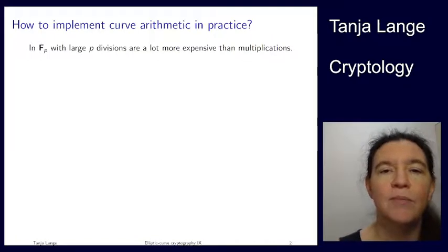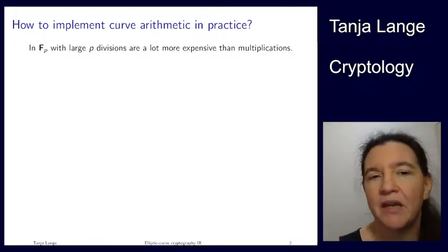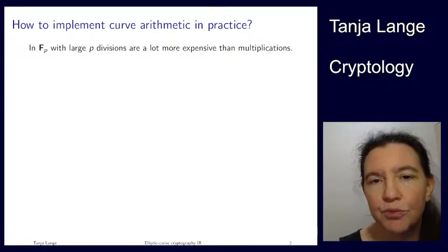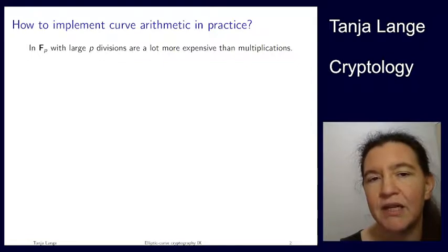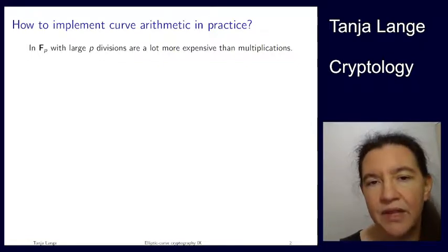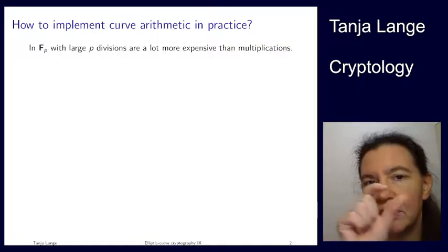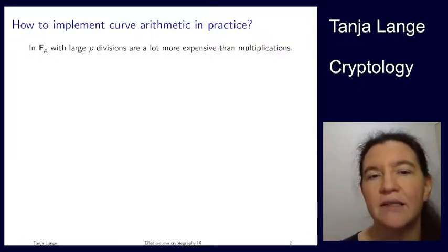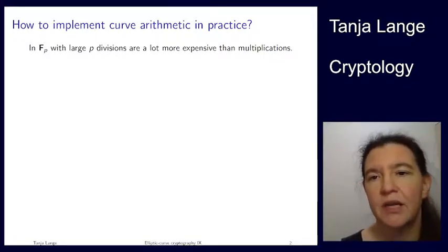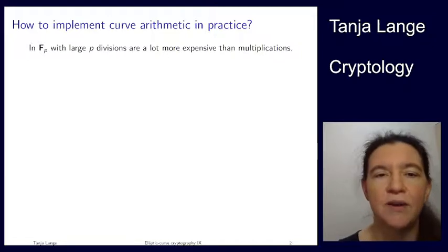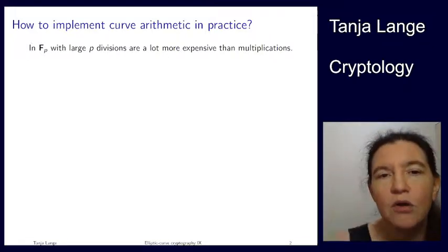But if you actually were to implement those on a computer, you're looking at a large P and you're seeing all these fractions running around. Either the slopes lambda had denominators or in the Edwards formula, we went through proving that those denominators are never zero in the good cases, the complete cases. We're seeing divisions. Now divisions are a lot more expensive than multiplications. In particular, when you're concerned about side-channel attacks, one of the typical ways of doing divisions is by first computing an inversion, computing one over the number.